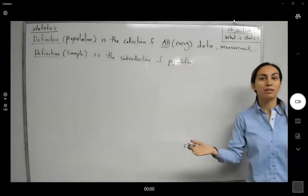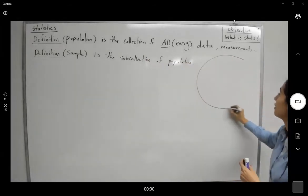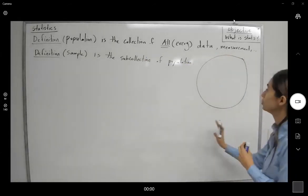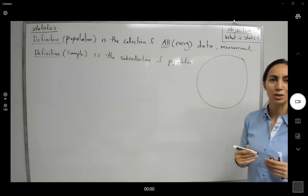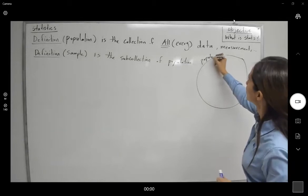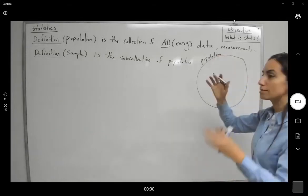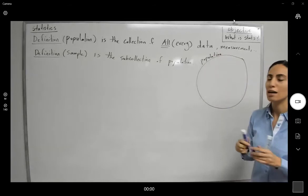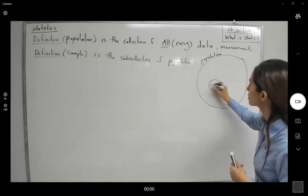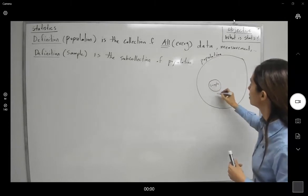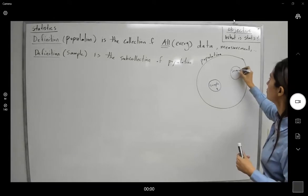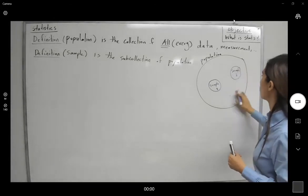So sample is the sub-collection of population. We're going to use a bigger circle representing the population, and a sub-proportion of population is sample. For example, you can take many samples from a population, sample number one, sample number two, and more.